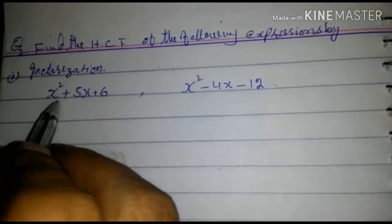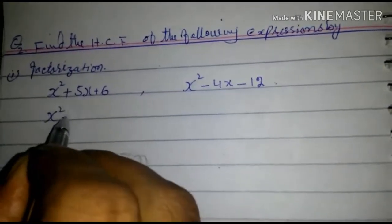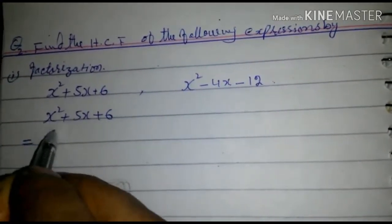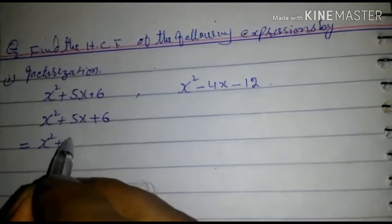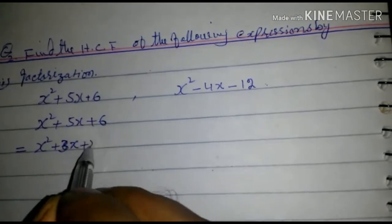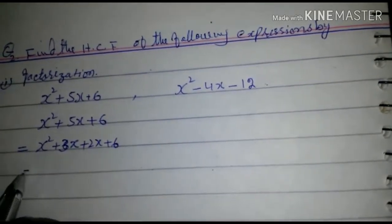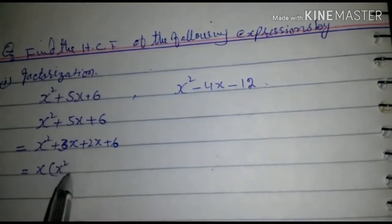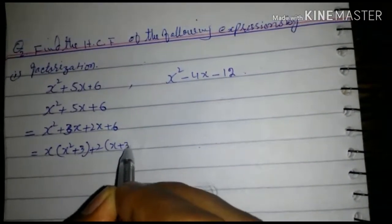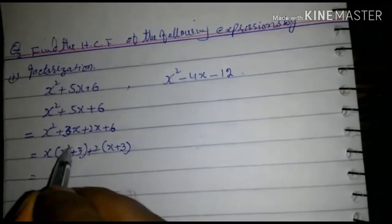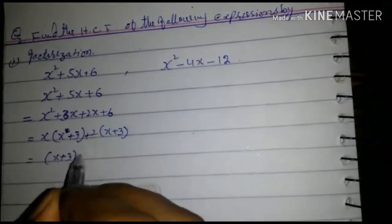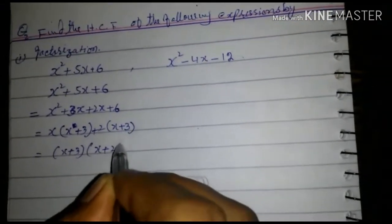Now, let's consider the first expression. x squared plus 5x plus 6 is equal to x squared plus 3x plus 2x plus 6. Taking x common: x(x plus 3) plus 2(x plus 3). Since x plus 3 is common in both terms, this factors to (x plus 3)(x plus 2).